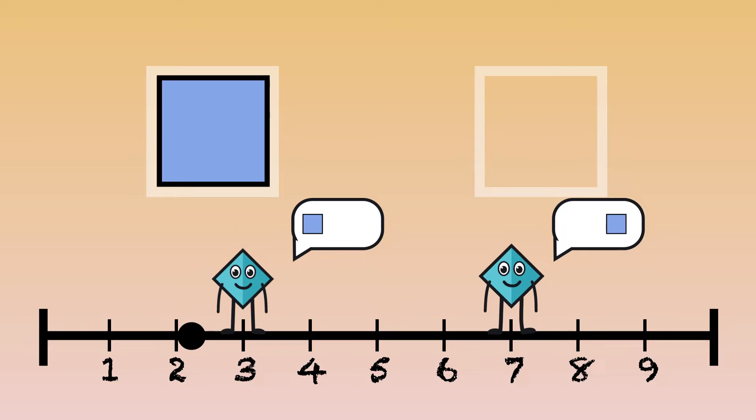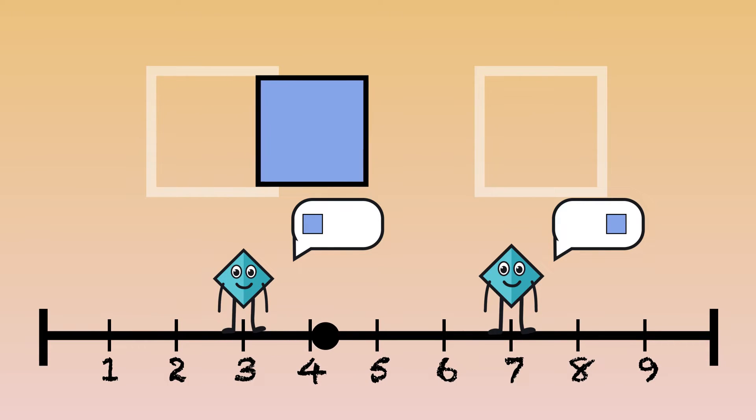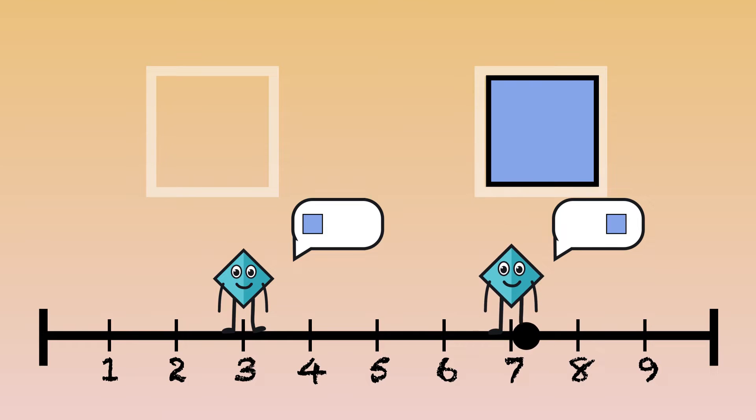Let's hit play. Notice how smoothly the square transitions between keyframes? The software automatically fills in the movement so that it flows perfectly from one position to the next.